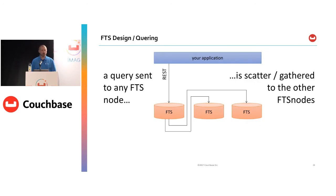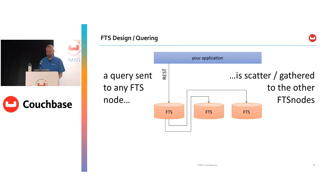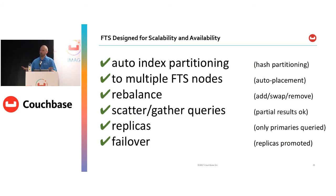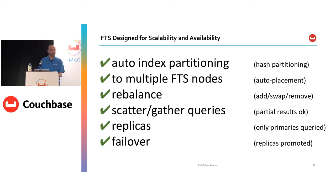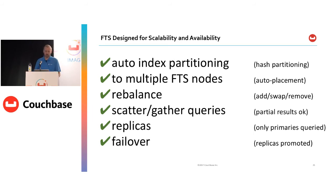Couchbase also uses a feature called DCP — basically streams of data changes going from Couchbase to the FTS nodes. An important property is that when a node goes down, when it comes back up we don't have to start building that partition from scratch; we can pick up from where we left off and resume. That's how index data is partitioned at index time. At query time, a query gets sent to any FTS node. If you're doing this manually with a REST query, you need to know an FTS node to start on, but if you're using any of the SDKs, that's taken care of for you. Once received by one FTS node, we do a scatter-gather approach: the query is forwarded to other nodes that have partitions needed to answer it, and results are returned, grouped together, and sent back to the caller.